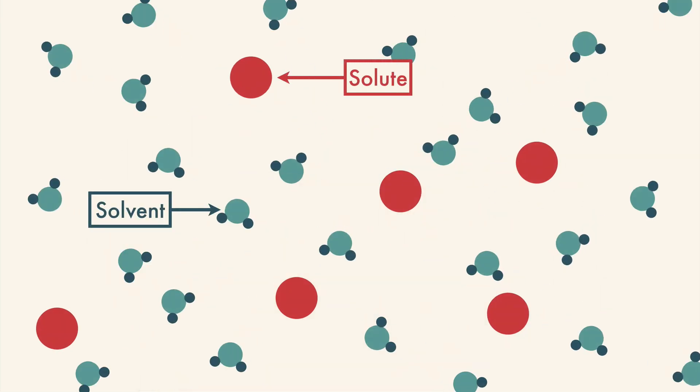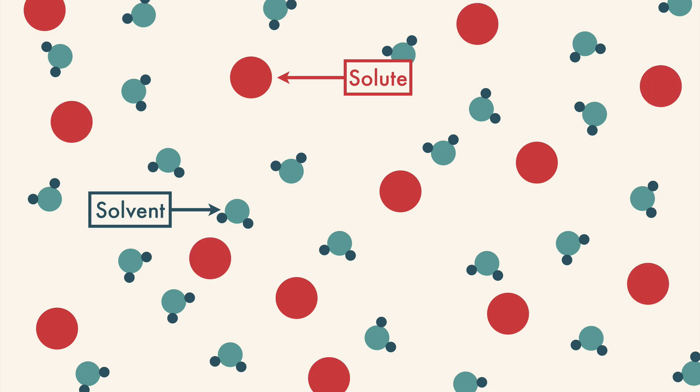The solute is the chemical that's dissolved and the solvent is the chemical that does the dissolving. In this case, it would probably taste better if you added more Kool-Aid powder and made a more concentrated solution. To measure concentration, chemists use molarity.